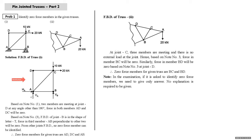For the first truss, we draw the FBD showing external loads and reactions. At A, a hinge gives reactions Ha and Va; at the roller, one reaction perpendicular to the horizontal plane. At joint D, two members are meeting at any angle other than 180 degrees with no external load, so by Note Number One, force in members CD and AD will be zero.